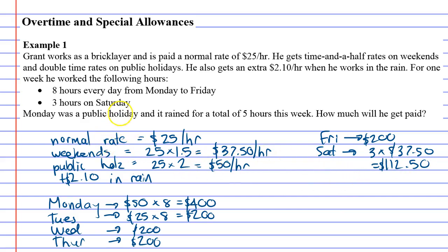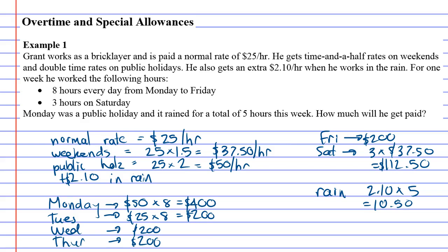We've done Monday to Friday and the three hours on Saturday, including Monday as a public holiday. It also says it rained for five hours this week. For the rain, he gets an extra $2.10 per hour, and he worked in the rain for five hours — that comes out to $10.50 for the rain.